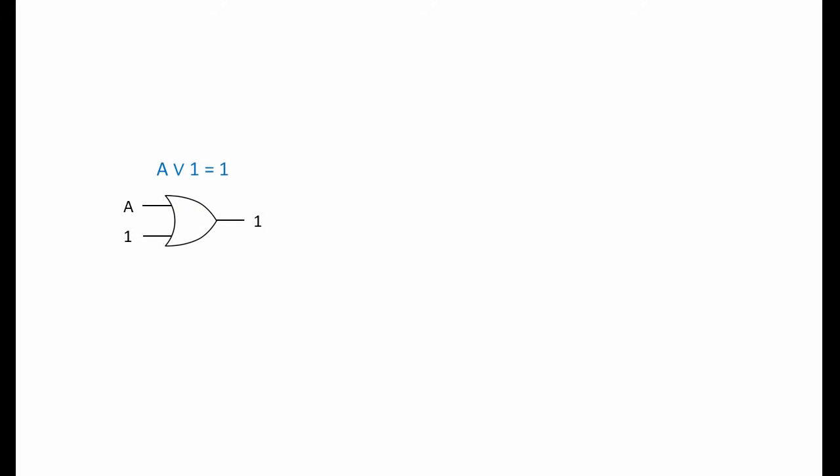Consider this OR gate — one of the inputs is permanently set to 1. There is always at least one input of 1, so there will always be an output of 1, regardless of the value of A. With this AND gate, one of the inputs is fixed at 0, so the output will always be 0, regardless of A. These expressions are collectively known as the annulment law. You may have heard the term annulment with regards to a marriage that doesn't legally exist — to annul actually means to declare null and void. You can see in both of these cases that input A has no effect.